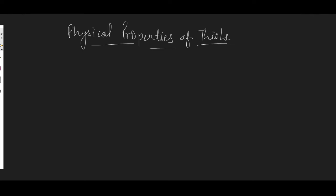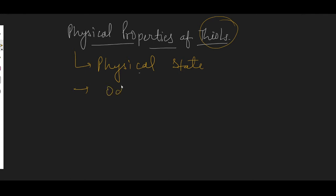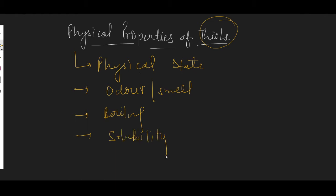What are the physical properties of thiols? We will discuss: first, the physical state of thiols; second, the type or odor/smell of thiols; third, the boiling point — and we will compare with alcohol; and fourth, solubility — whether thiols are soluble or insoluble in water. So these four physical properties — smell, boiling point, and solubility — we will discuss.